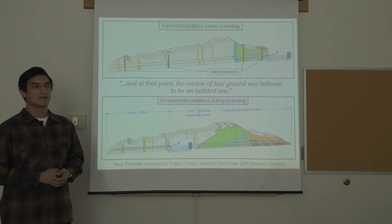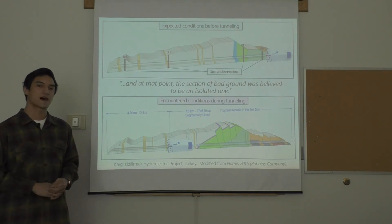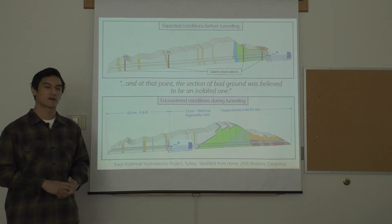During the first two kilometers of boring, unexpected ground conditions were encountered, leading to seven distinct stoppages of the tunnel boring machine, totaling over three months of project delays.